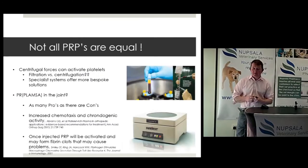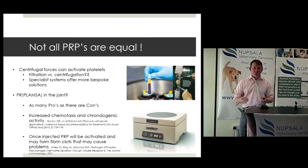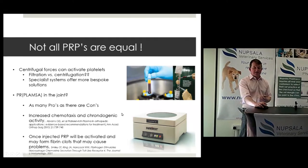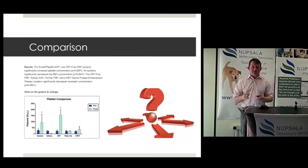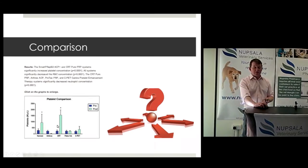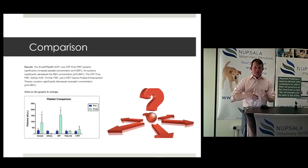A word of warning: not all PRPs are equal. There are many PRP systems on the market — don't believe the hype or the sales rep. Do your own homework. Leading manufacturers with long track records include the Harvest system, the Companion CRT system, which has been well validated in the small animal arena, and the PALL Corporation patient-side system. What we're looking at here is the ability to produce a consistent, high growth factor concentration — as demonstrated in a paper by Sherman Knapp.